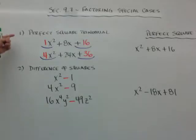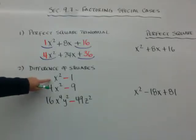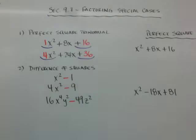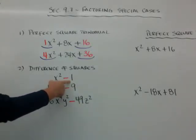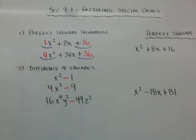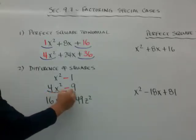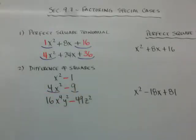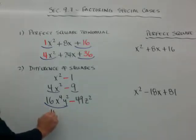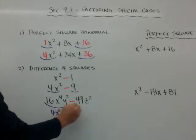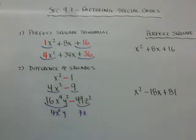The second type of special case is difference of squares — a perfect square minus another perfect square. The square root of x squared is x, and the square root of 1 is 1. Here's another perfect square minus another perfect square, so it's difference of squares — perfect squares. The square root of this would be 4x squared y, and this is a perfect square which would be 7z as the square root.